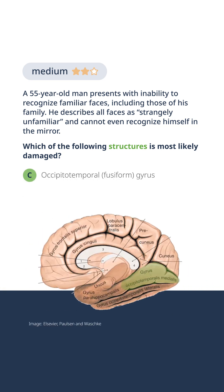Here we're looking at the occipital temporal medial gyrus, shaded here in green. What you need to remember about this region of the temporal lobe is it's involved in face recognition, which allows us to identify individuals that we've had contact with. A lesion of this area would result in face blindness.